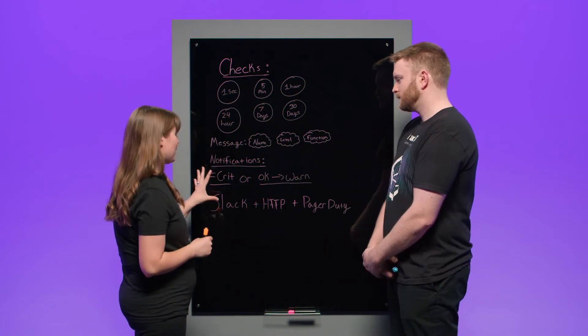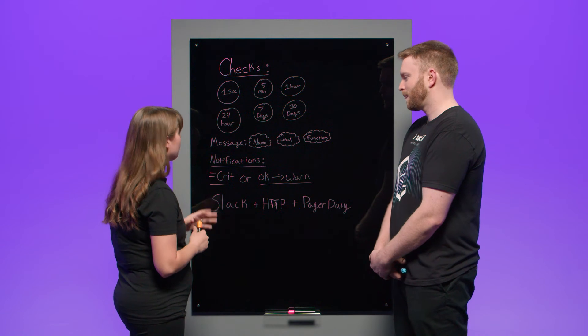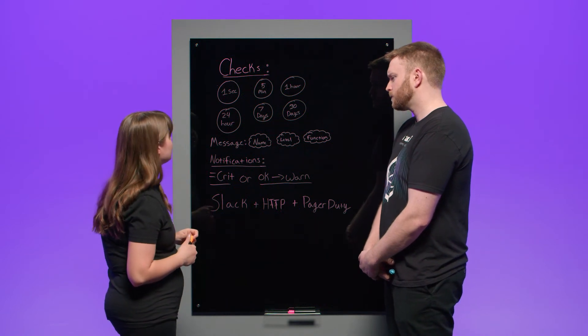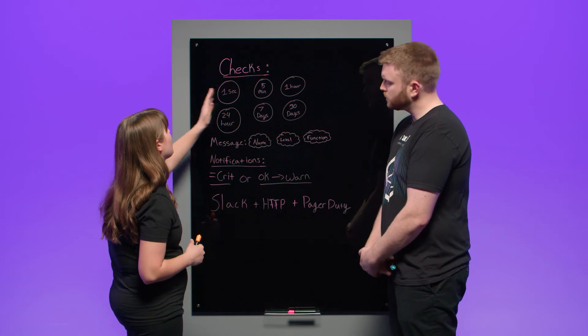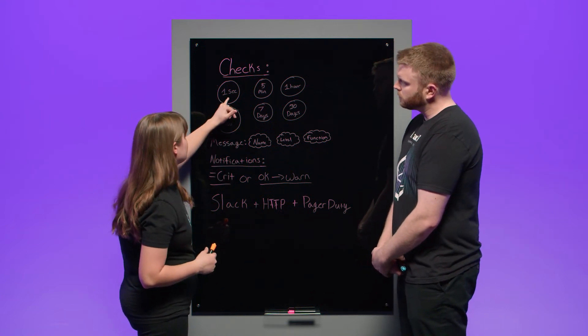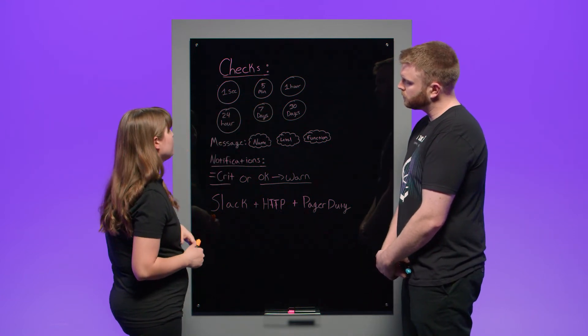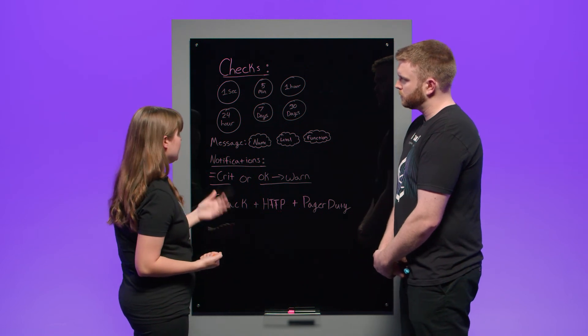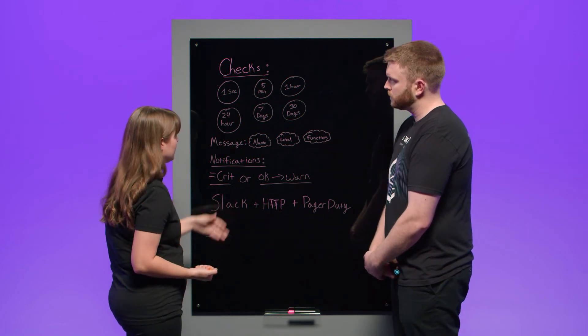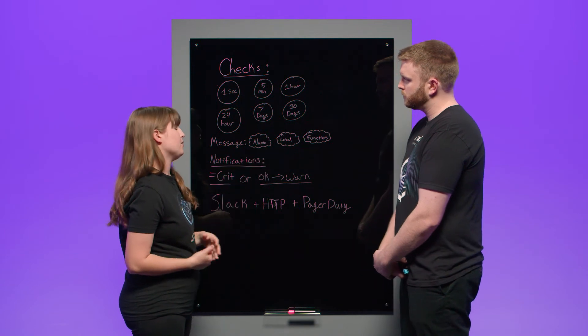But if you do, that's why we have our notification system. And one thing I do want to mention here is that notifications are set up very similarly to checks in their options. So you're going to be able to change the amount of time they run too. So you can have your checks run every 5 minutes, but have your notifications run every hour. And you can also, like I said before, customize the message that is inside of your notifications. You can change the name, the level, and the function.